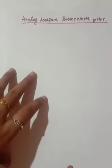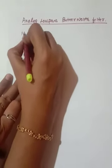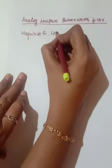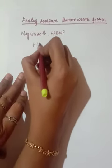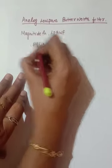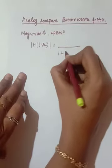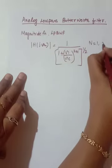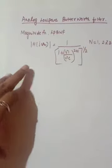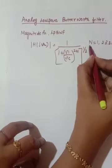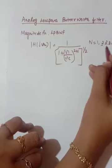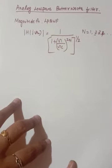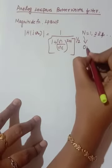We are going to write down the magnitude function of the low pass Butterworth filter. The magnitude function is: |H(jΩ)| = 1 / [1 + (Ω/Ωc)^{2N}]^{1/2}, where N = 1, 2, 3, ... is the order of the filter and Ωc is the cutoff frequency. This is a low pass filter design, and N can be chosen based on the design requirement.